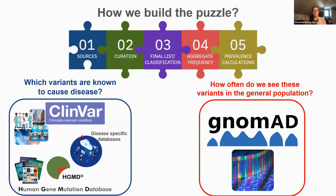Once we know that list of variants, we can go to population databases — there are many of them. I should disclose that I am the scientific operations manager for gnomAD, which is one of the largest open-source databases of exome and genome information, providing a snapshot of what variation within the human population looks like. We look in these databases to see how often we see these disease-causing variants in carriers — people we expect to have no symptoms. Once we know how many carriers there are, we can use the Hardy-Weinberg equation, a mathematical algorithm, to estimate how many people we expect to have a genetic diagnosis.